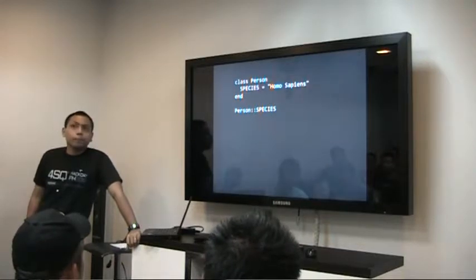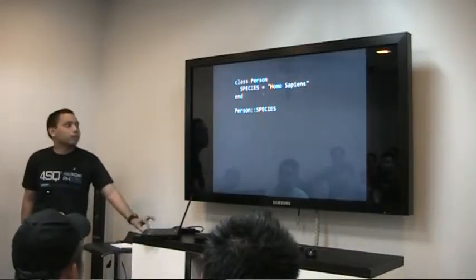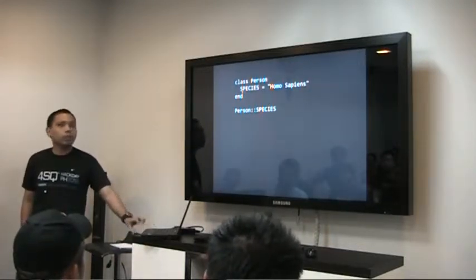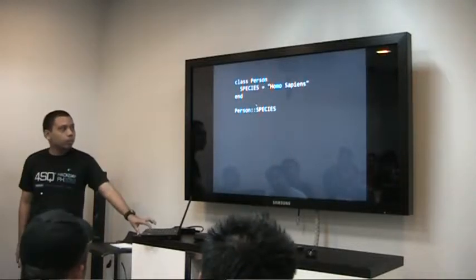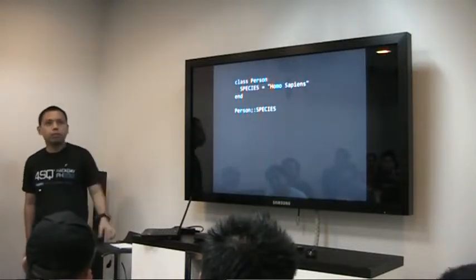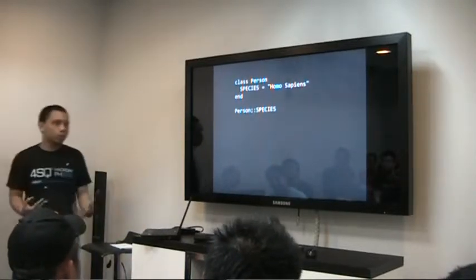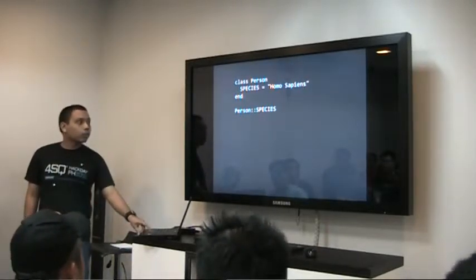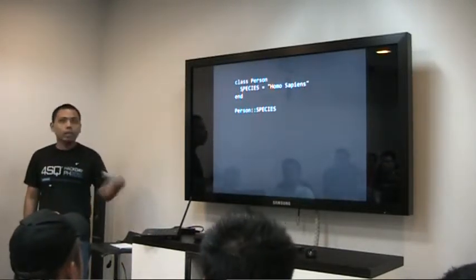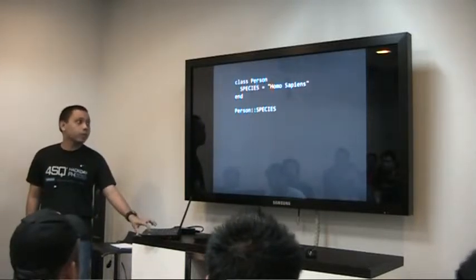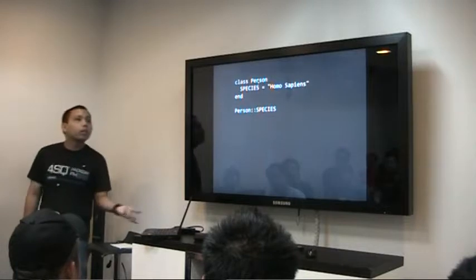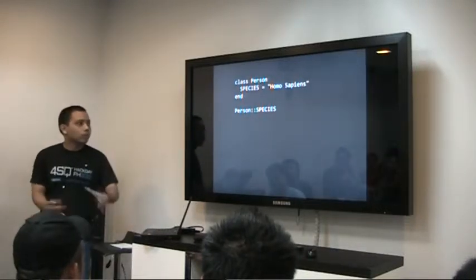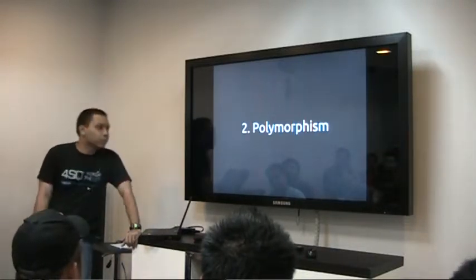Also, constants — anything that starts with a capital letter is essentially a constant. To refer to them, you use the double-colon symbol. You might notice that anything with a capital letter... class declarations are essentially constants too. But that's another story.